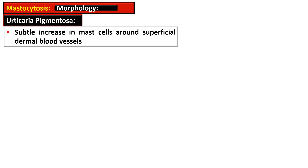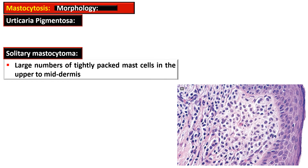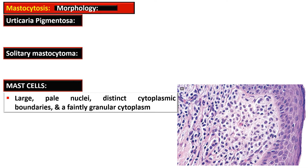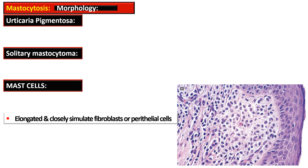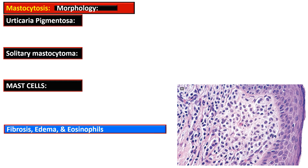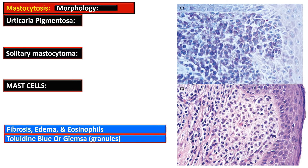On histology, there is a subtle increase in mast cells around superficial dermal blood vessels in urticaria pigmentosa. The solitary mastocytoma is marked by large numbers of tightly packed mast cells in the upper to middle dermis. These cells have large pale nuclei, distinct cytoplasmic boundaries, and fairly granular cytoplasm. Some cells are elongated and closely simulate fibroblasts or epithelial cells. There is presence of fibrosis, edema, and eosinophilic infiltration. The stains used for metachromatic granules of mast cells are toluidine blue or Giemsa stain.